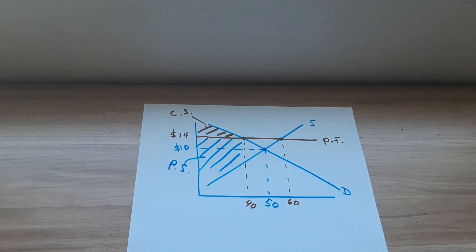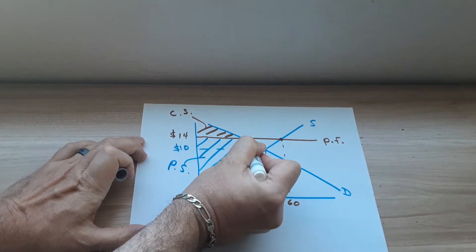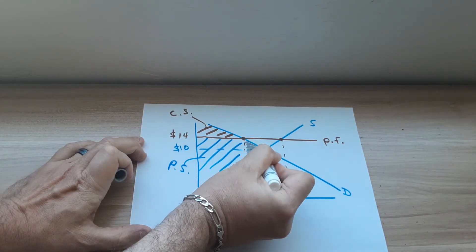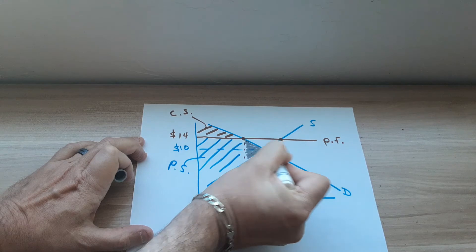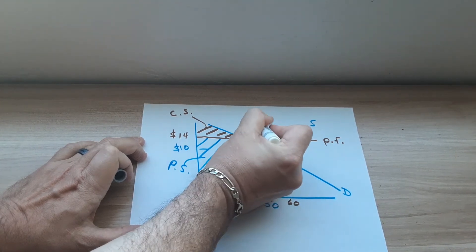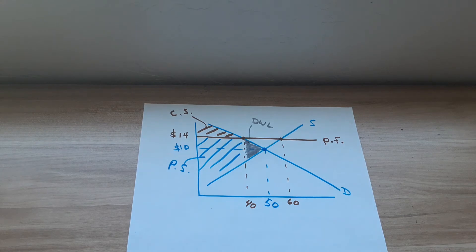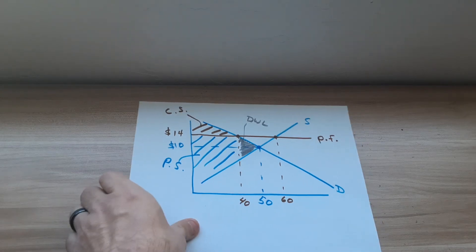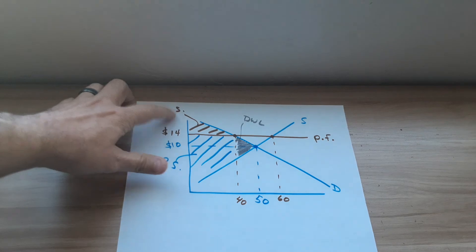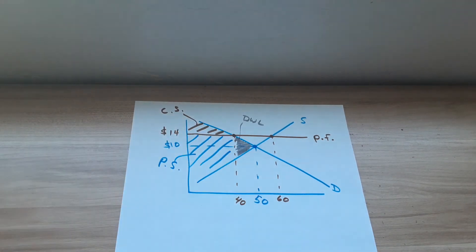Nobody got this area here — the 40 to 50 units, the 10 units that were lost. No one got those units, so the area I'm shading in gray is your area of deadweight loss. Deadweight loss is the loss of consumer and producer surplus — it's like the area of market failure because of this price floor. So here's what your consumer surplus, producer surplus, and deadweight loss look like with a price floor.